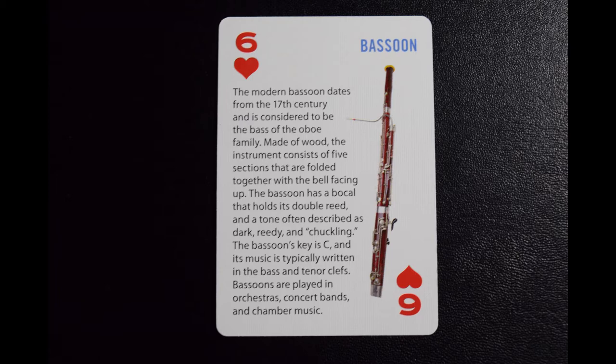So the bassoon comes from the 1600s. It's considered the base of the oboe family because it's got the lowest sound of all the oboes. We learn that it's made of wood. Remember, the bell of an instrument is the part — the big part — that the sound comes out of. We learned that its tone is dark, reedy, and chuckling. It's a very interesting sounding instrument.